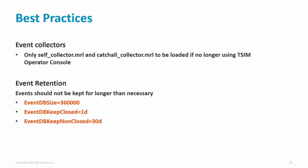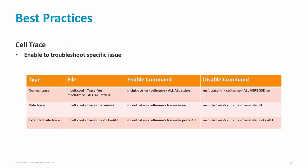Care should be taken if EventDBKeepClosed or EventDBKeepNonClosed parameters are to be increased. By default, the cell will only write to the log messages with a severity of information, warning, error, or fatal. A cell trace should be enabled to troubleshoot a specific issue and will write verbose messages to the log. It can be enabled dynamically with the MCFG trace command or by modifying the mcell.conf and mcell.trace files and restarting the cell. Do not be afraid to enable trace, as even running with trace enabled for a period of time will not bring the system down. For rule tracing, trace rule level 2 should be set. Trace rule 'ports all' is the most verbose and should not be left on all the time, as it could cause slowness in the cell due to the amount of logging.